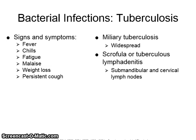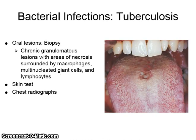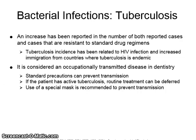Miliary tuberculosis is widespread. Scrofula, or tuberculous lymphadenitis, is enlargement of the submandibular and cervical lymph nodes. Oral lesions biopsied will show chronic granulomatous lesions with areas of necrosis surrounded by macrophages, multinucleated giant cells, and lymphocytes. Tests for tuberculosis include a skin test and chest radiographs. Tuberculosis incidence has been related to HIV infection and increased immigration from countries where tuberculosis is endemic. It is considered an occupationally transmitted disease in dentistry.